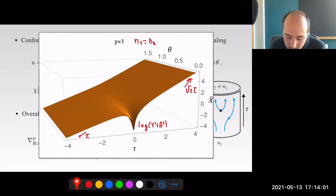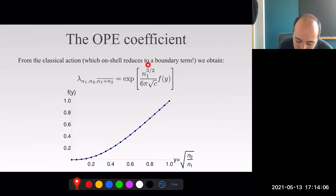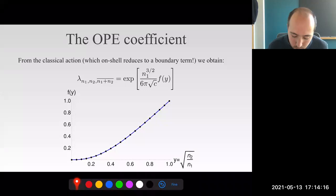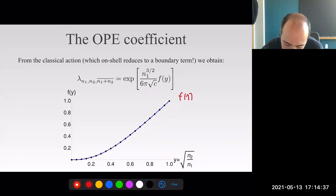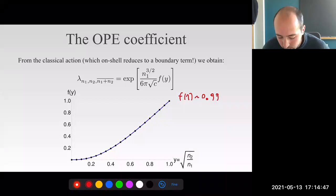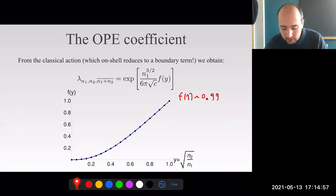You can solve this for many values of y, compute the classical action—which on-shell reduces nicely to boundary terms—and obtain the OPE coefficient. The OPE coefficient generically goes like exp(N1^(3/2) / sqrt(c)) times a normalization factor times a function f(y), where y = sqrt(N2/N1). This function f(y) is obtained numerically and plotted. Normalized such that f(1) is approximately 1 (~0.99), the OPE coefficient grows exponentially fast in the charge when all charges are of the same order. The only numerical input is the function f(y), while the N1^(3/2) dependence follows analytically from rescaling by sqrt(N1) and the homogeneity of the action.